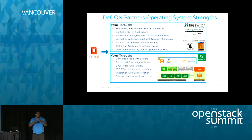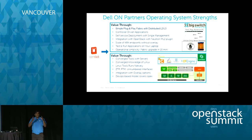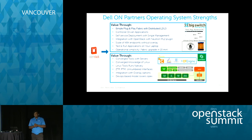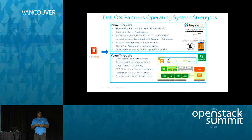Big Switch's philosophy is a pod model: you build a pod of a certain scale — about 48K endpoints, 16 racks, around 700 servers. If you want to scale beyond that, you build another pod, and all pods connect up to a super-spine core network. That's what big players like Facebook and Microsoft are doing. Big Switch also has a Neutron ML2 plugin — it interacts with the OpenStack environment, gets data out of it, and helps plumb the physical network. They've also made contributions to the Horizon GUI.